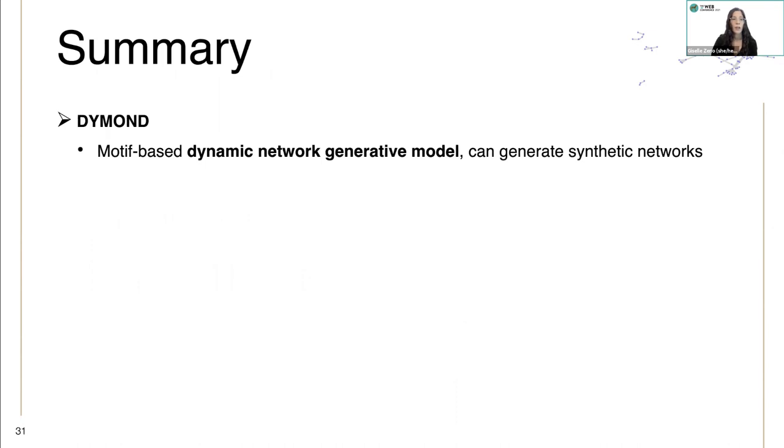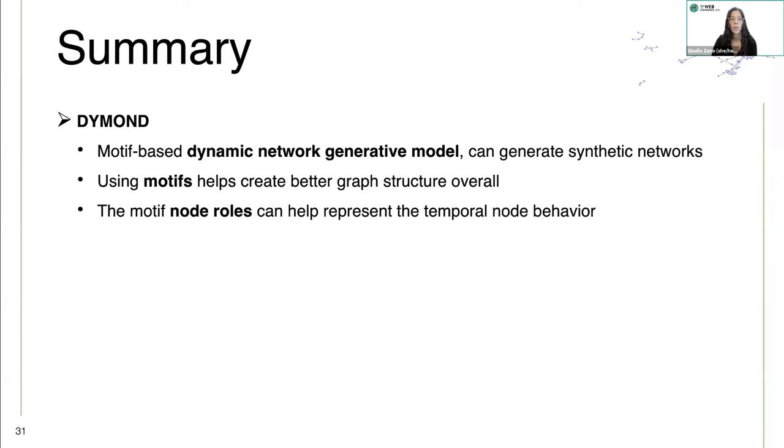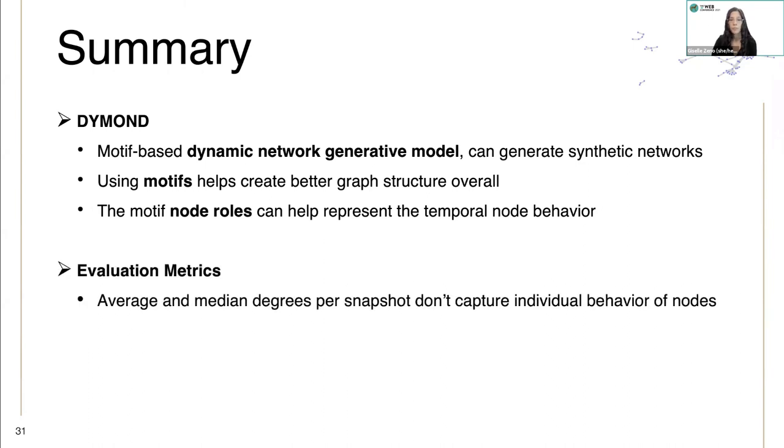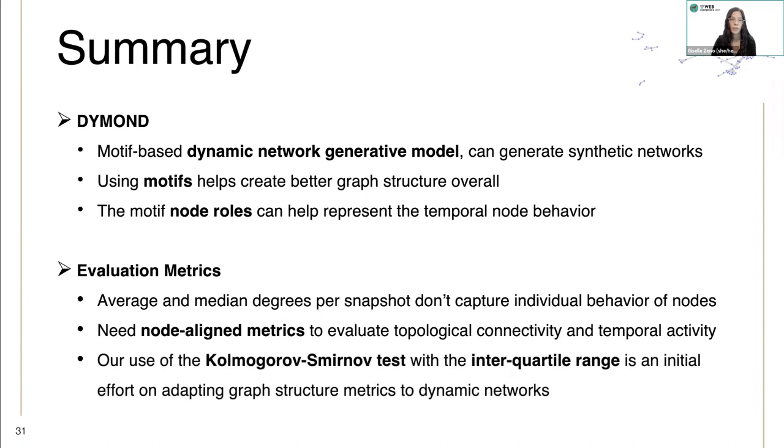To summarize, our model Diamond is a motif-based dynamic network generative model that can generate synthetic networks. Using motifs helps to create better graph structure overall. The motif node roles can help represent the temporal node behavior. In evaluation metrics, just using the average and median degrees per snapshot doesn't capture the individual behavior of nodes. We need node aligned metrics to evaluate the topological connectivity and the temporal activity. Our use of the KS tests with the interquartile range is an initial effort on adapting graph structure metrics to dynamic networks. Thank you.